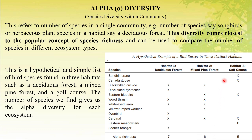And for habitat three, five species of bird are observed, so the alpha diversity is five.